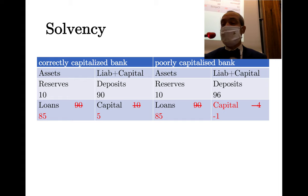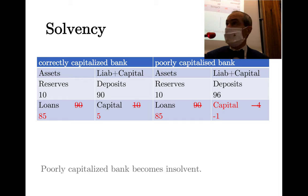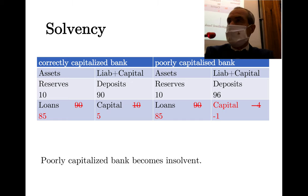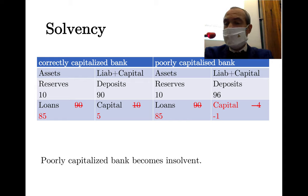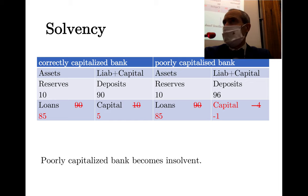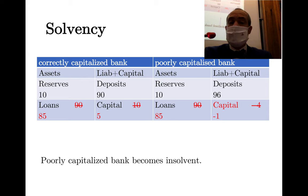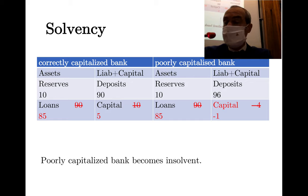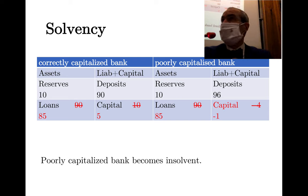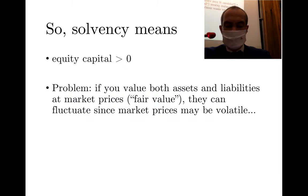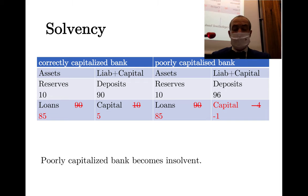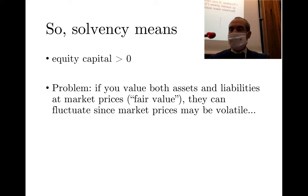You take the loss from capital — from shareholders. The correctly capitalized bank had 10 in capital, so capital is halved to 5 but remains positive. The poorly capitalized bank had only 4 in capital, so capital becomes negative. You cannot have negative capital — this means you cannot pay all depositors, so the bank must be resolved.